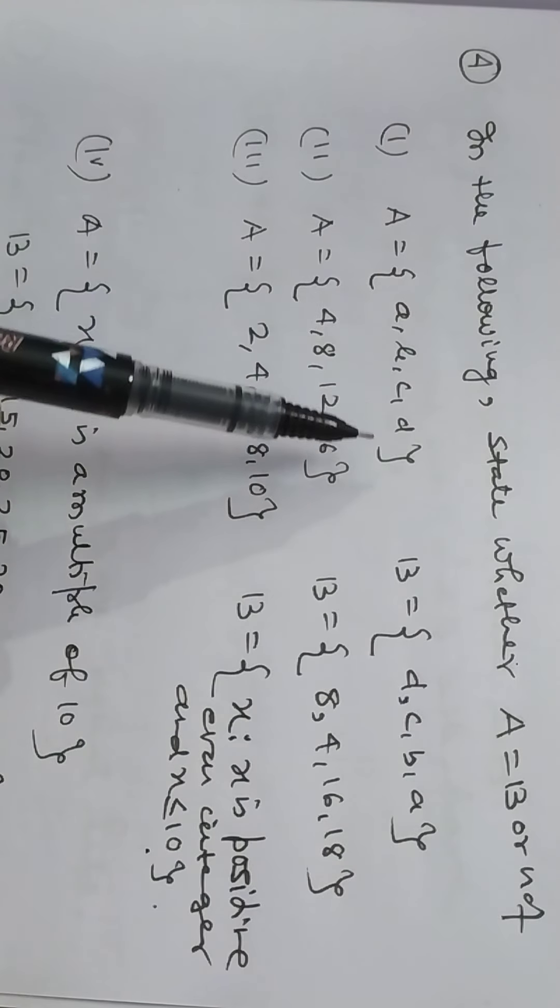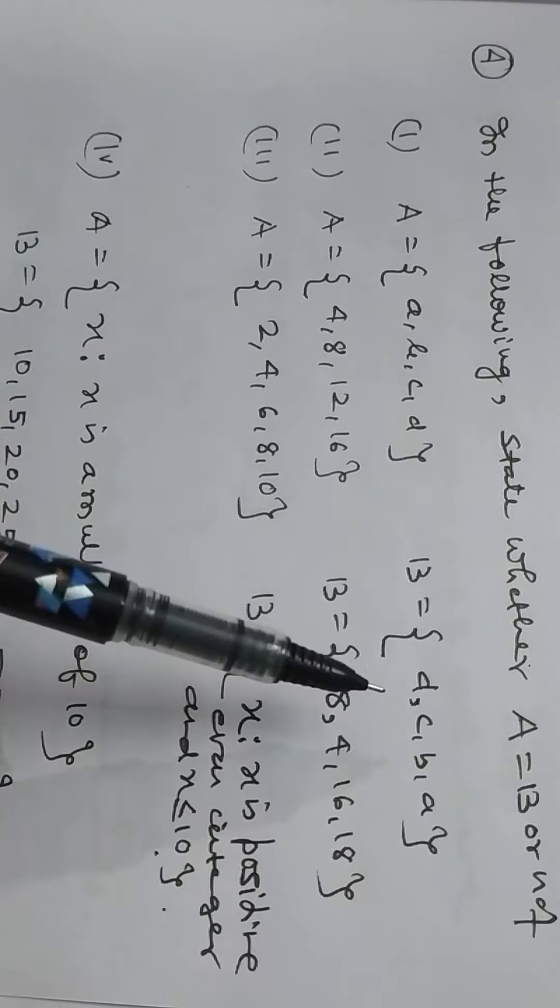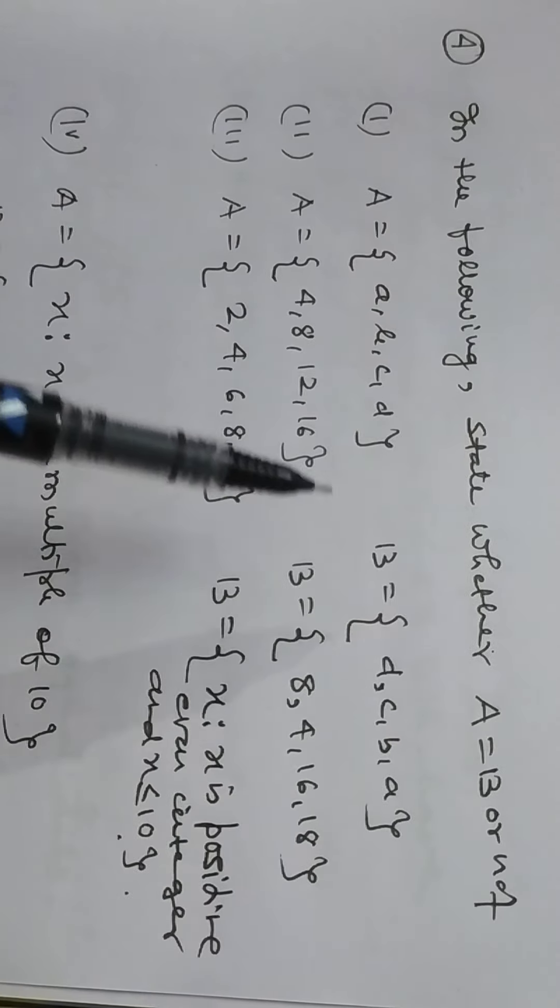Now how do we learn? What is the relation? A, B, C, D. A, B, C, D. So A and B are equal sets? Yes, first is equal sets.